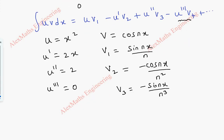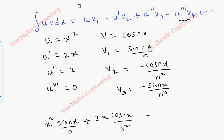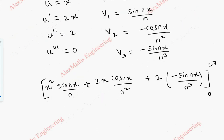Now we are going to substitute all these in Bernoulli's formula. So u·v₁ is x squared times sin nx by n, minus u' times v₂: u' is 2x and v₂ is minus cos nx, so I can make this plus 2x cos nx by n squared. Then plus u'' times v₃: u'' is 2 and v₃ is minus sin nx by n cubed. The limit is 0 to 2π and outside there is 1 by π.